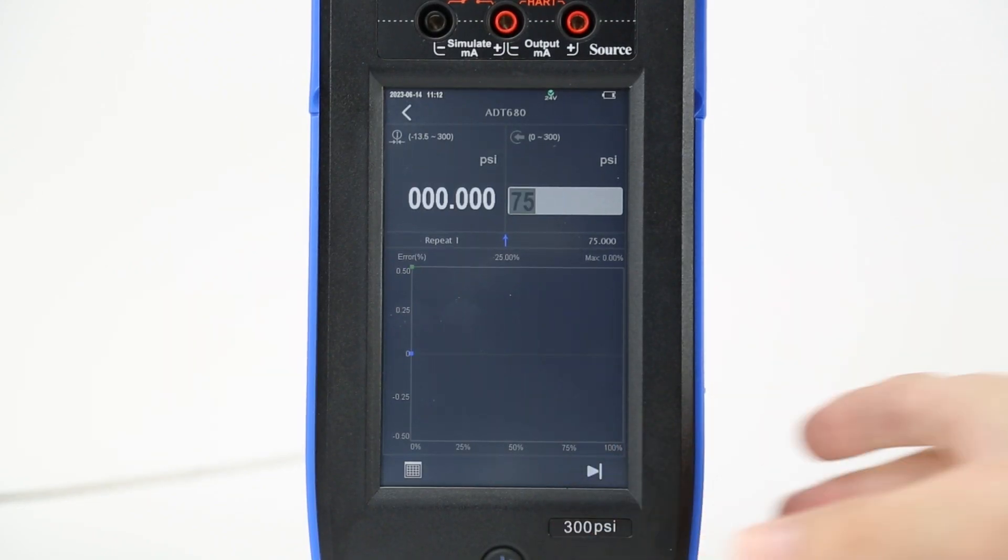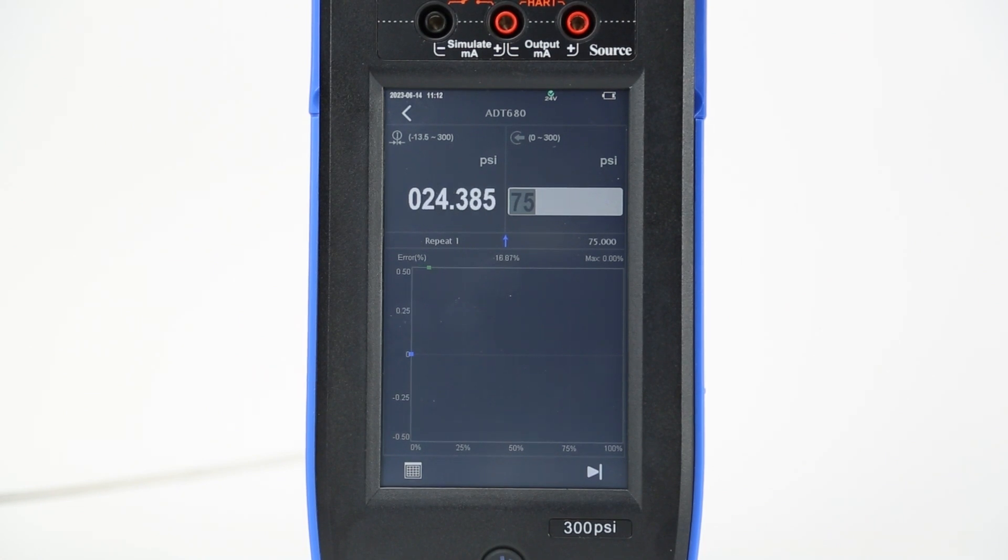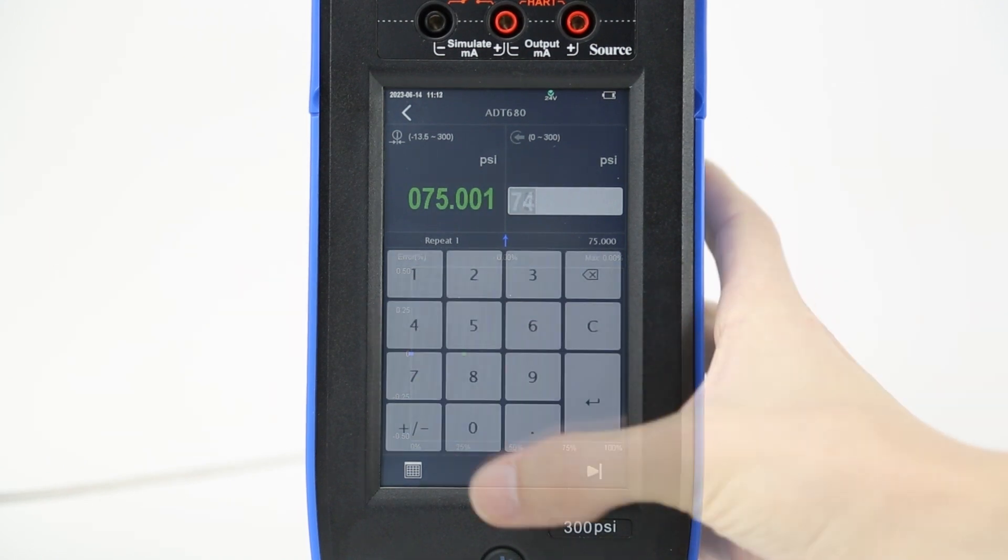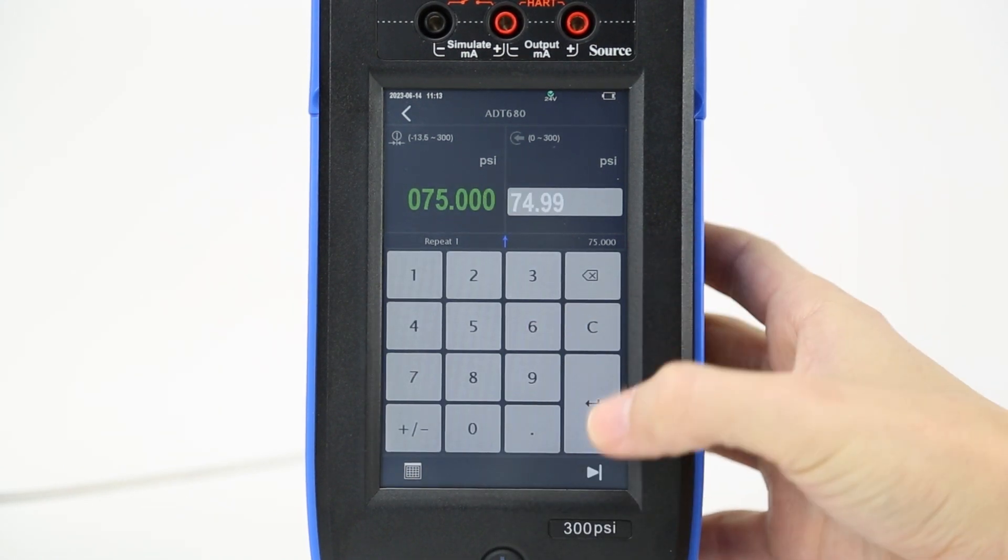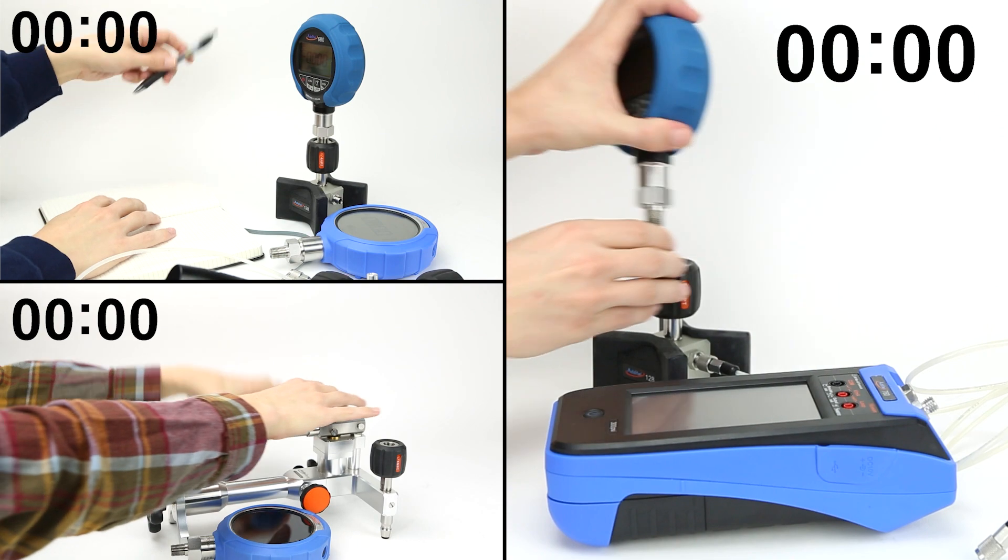Technician 3 will simply press the play button on their 760, and watch it automatically generate pressure to the first set point using its internal pump. Once the reading turns green and beeps to indicate stable pressure, they can enter the value shown on the gauge under test. Each pressure recording will continue in the same manner.